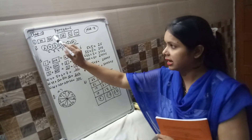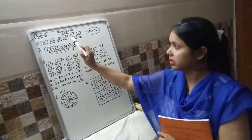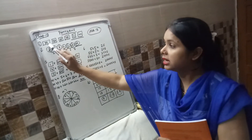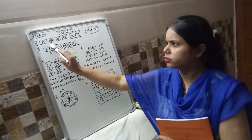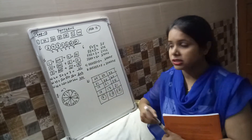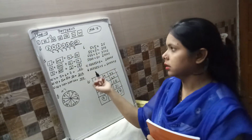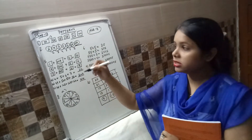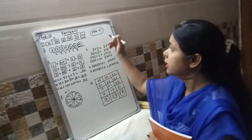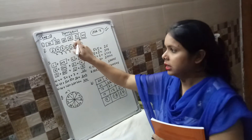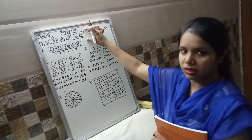Question number 1: 39, 52, 65, 78 — you have to tell the next two numbers. Find the difference between them: 52 minus 39 is 13, 65 minus 52 is 13, 78 minus 65 is 13. That means all differences are 13. So we have to add 13 to the previous number, and those numbers will come.